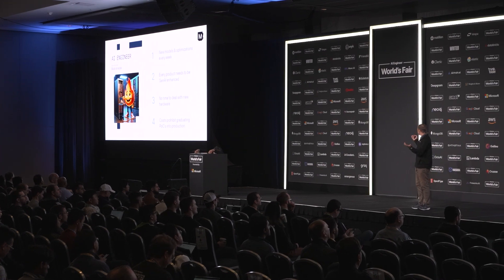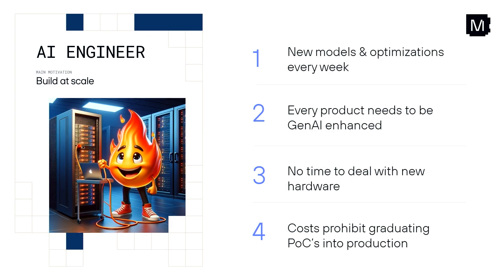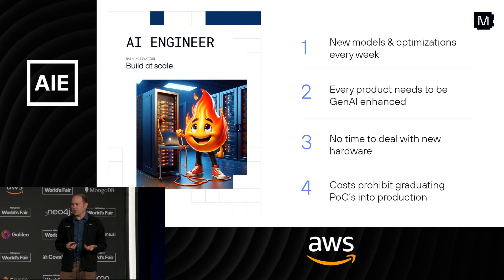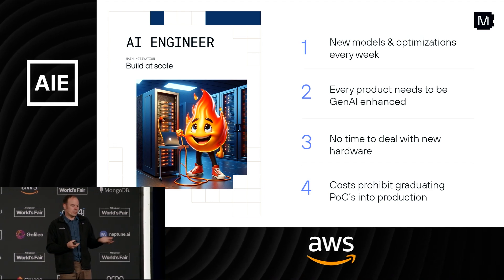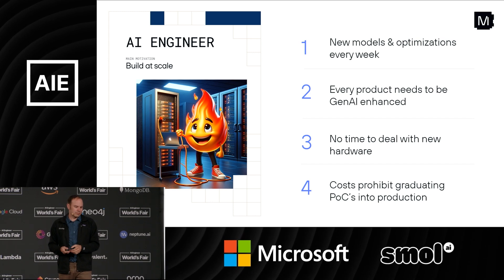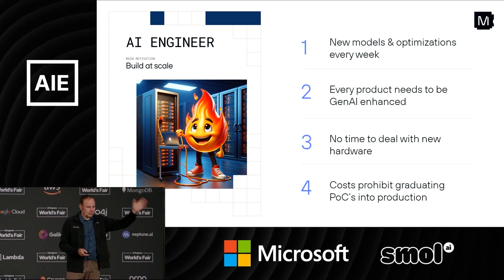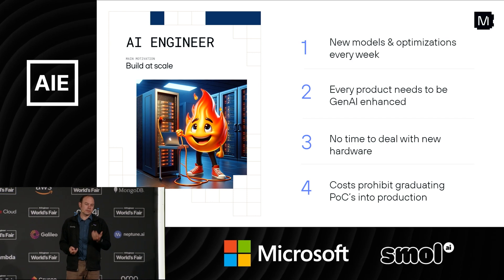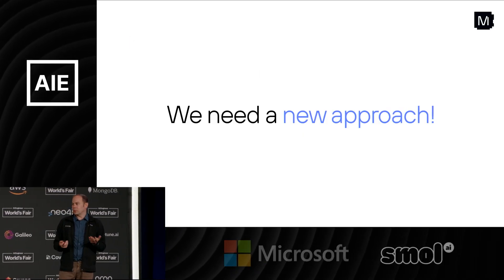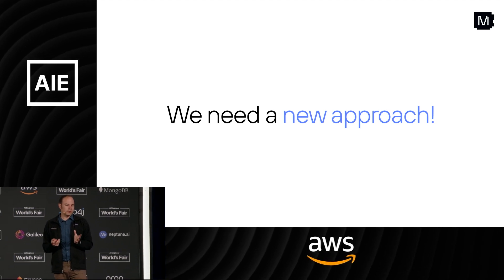So whose fault is it? Is it our fault? Many of you are AI engineers. Let's sympathize with the plight of the AI engineer. These folks that are building this have new models and optimizations coming out every week. Every product needs to be enhanced with Gen AI — there's so much to do we can't even keep up. There's no time to deal with new hardware and all the other exciting new features. And once you get something that actually works, the costs end up making it very difficult to scale, because getting things into production means suddenly you're paying on a per-unit basis. So it's not the AI engineer's fault.